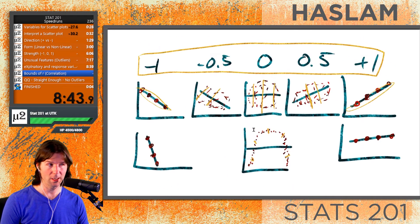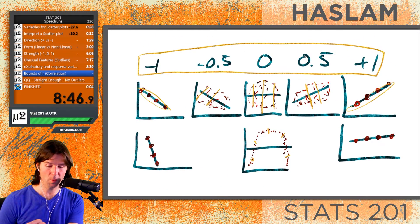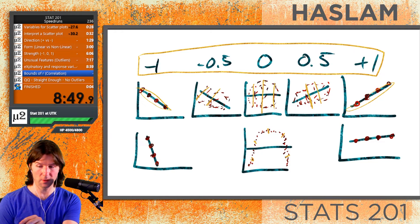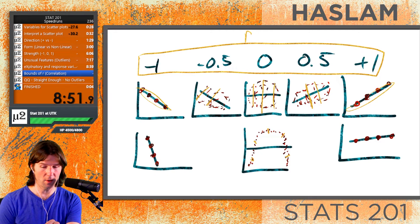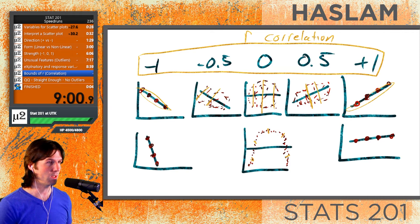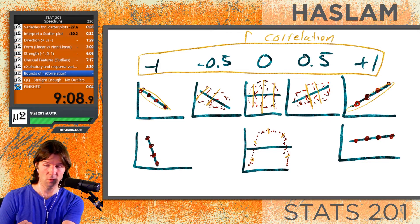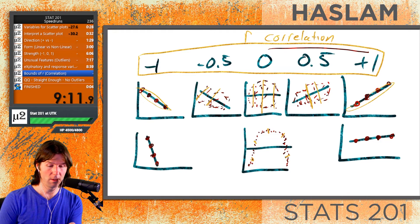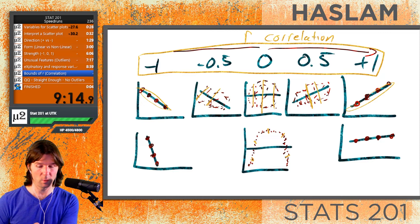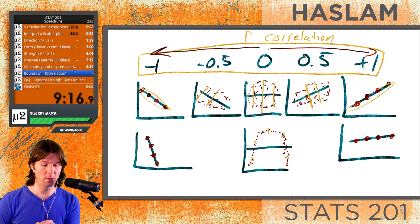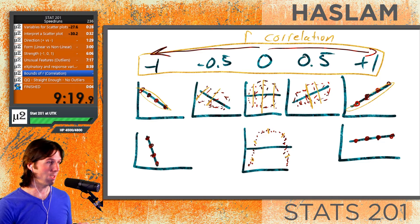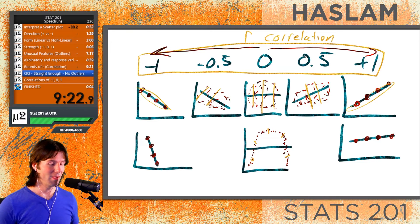The abbreviation for correlation is r. The bounds of correlation run from negative one to positive one — negative one being perfect negative, positive one being perfect positive, and zero being the weakest. The further from zero, the stronger the correlation. Positive 0.5 and negative 0.5 are of equal strength.